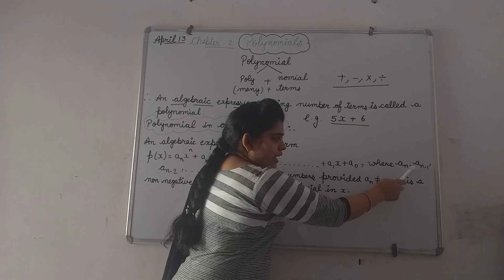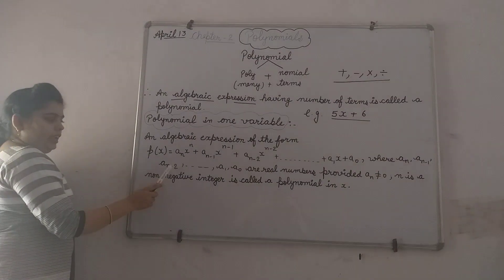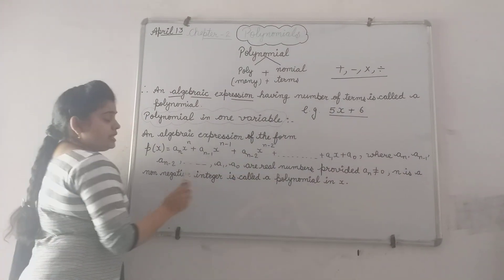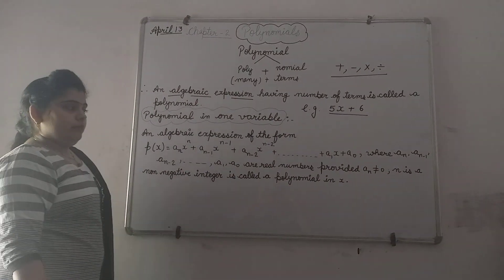where an, an minus 1, an minus 2 up to a1, a0 are real numbers. These all are real numbers.